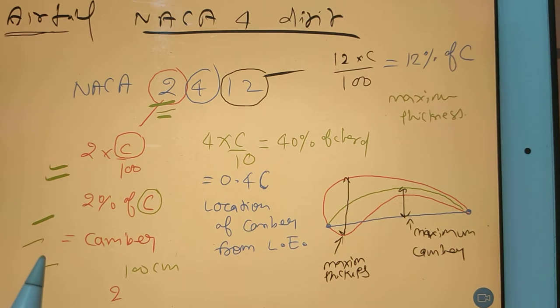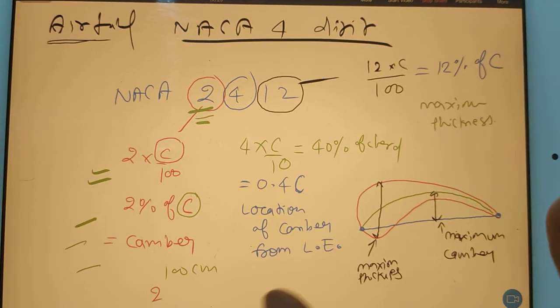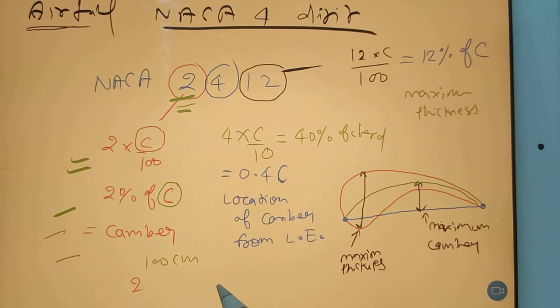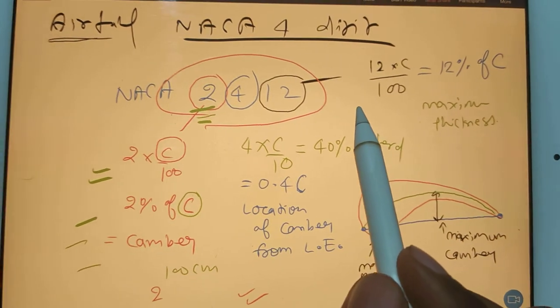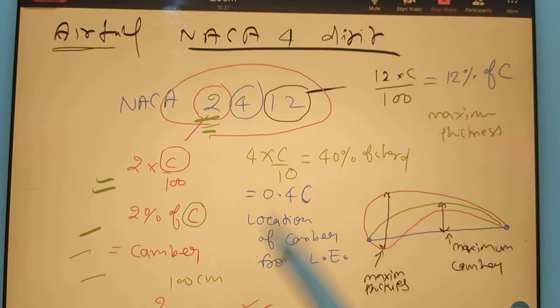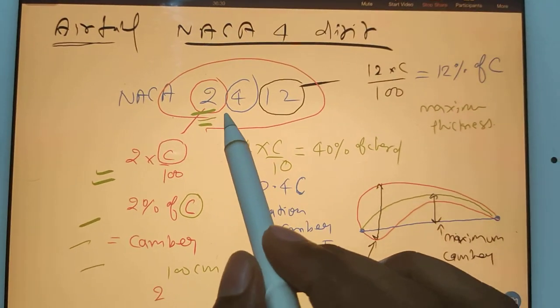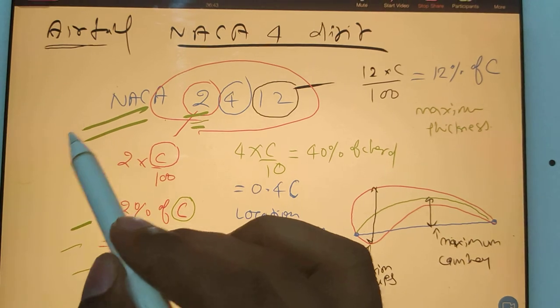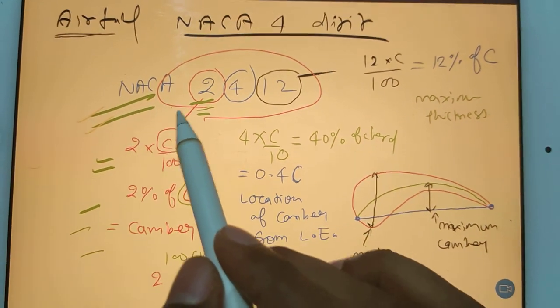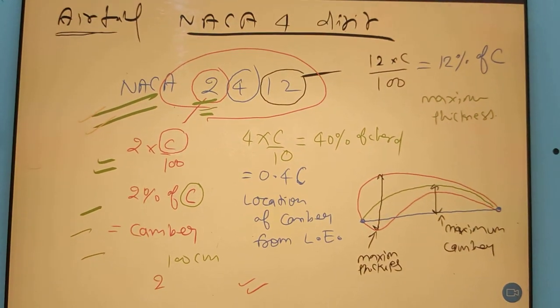Okay, now one very interesting question is there based on this NACA 4 digit. That question I will put in mock paper, so I will see how many people are doing correctly that question. I will not reveal the question, and mostly they will ask that question only. That is a very popular question. I will give you in the mock paper.